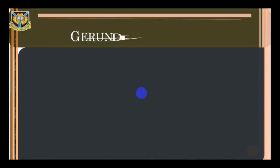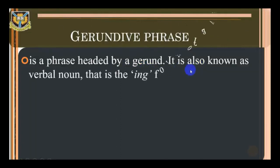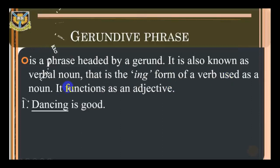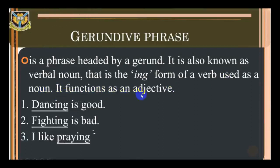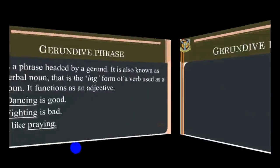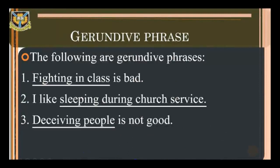Gerund phrase: a gerund phrase is a phrase headed by a gerund, also known as a verbal noun — that is the -ing form of a verb used as a noun. It functions as a noun. For example: 'dancing is good,' 'fighting is bad,' 'I like playing.' Examples of gerund phrases: 'fighting in class is bad' — 'fighting in class' is a gerund phrase. 'I like sleeping during church service' — 'sleeping during church service' is a gerund phrase.